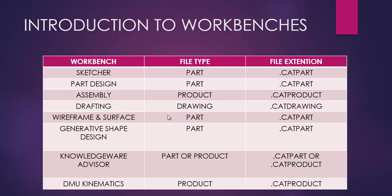Now if you observe this table, here we are having several workbenches and each and every workbench is having different file types and file extensions. Now while creating a file, you have to save it using a file type and after saving it, you will have an extension. So suppose if you take an image file, it can be saved in several formats like JPEG, PNG, or SVG depending upon the application. In the same manner, if you want to create a file in CATIA V5, you have to save it using predefined file types like part, product, drawing, and etc.